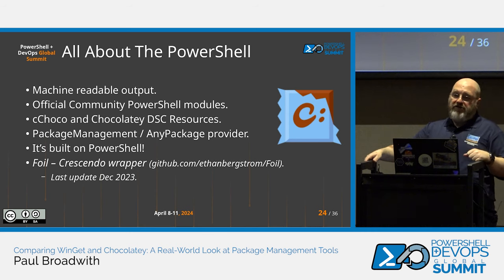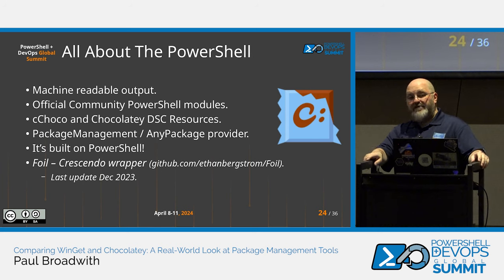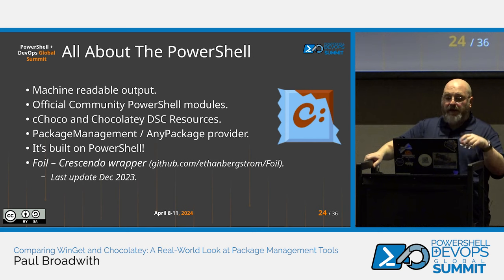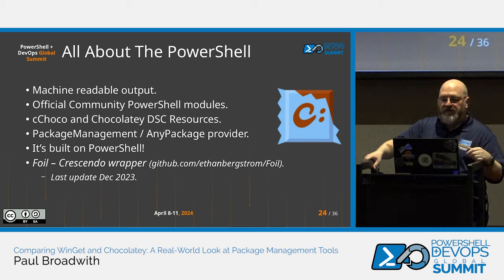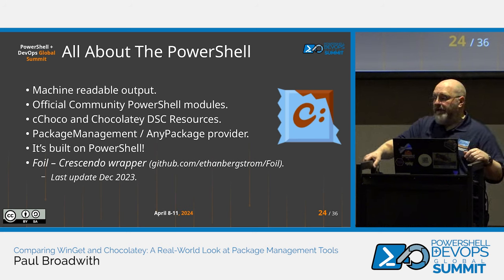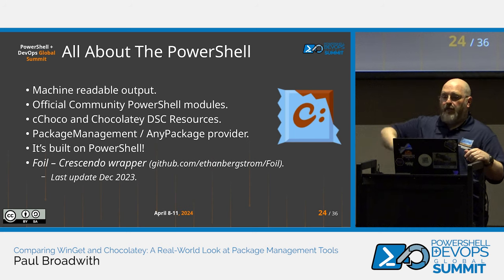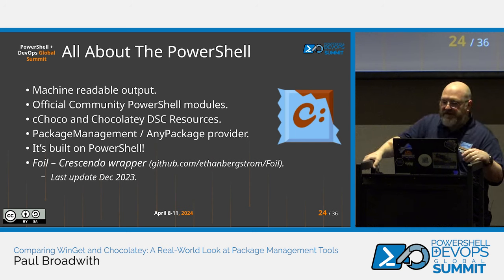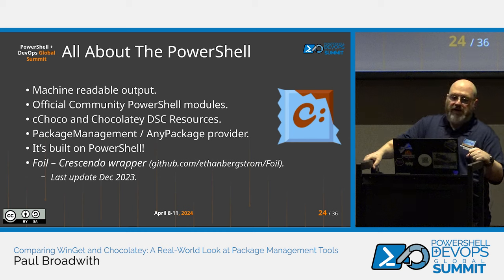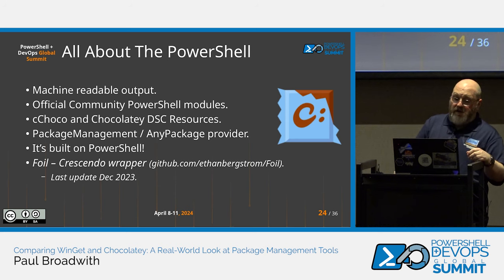There are also official community PowerShell modules for Chocolatey: 'cChocolatey' was maintained by Chocolatey, and there's a Chocolatey DSC resource — also the 'chocolatey' module — maintained by Gael Colas, who does a lot of work around DSC in the community, as part of the Chocolatey community organization. There's also the PackageManagement OneGet provider. Everything in a Chocolatey package is a PowerShell script, so it's easy to maintain if you know PowerShell. Ethan Bergstrom also created Foil — a Crescendo wrapper for Chocolatey CLI, last updated in December.